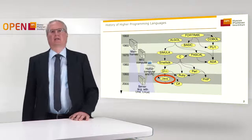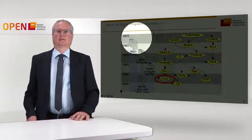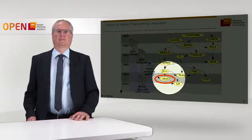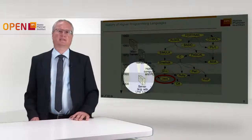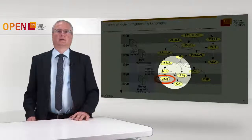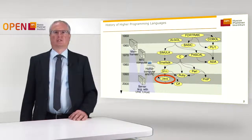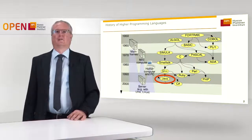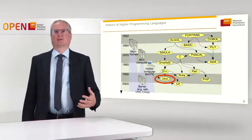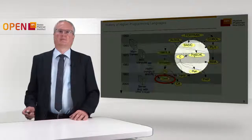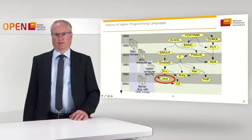If we look at the history of higher programming languages, we see that Java is right at the bottom. So it's a comparably new programming language originating from the 90s, started during the expansion of the World Wide Web, when the World Wide Web became popular. And so it is sort of an antagonist to COBOL, which is a very, very early programming language. Java is a rather modern language.